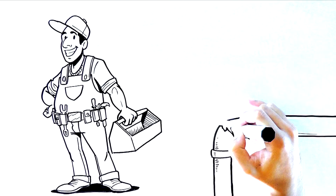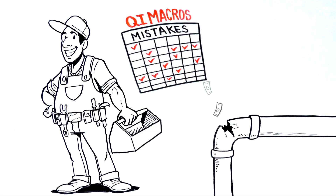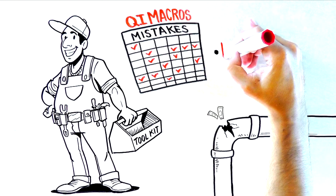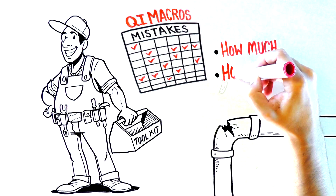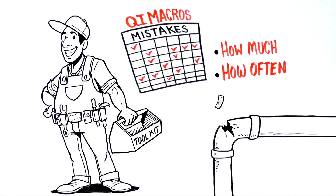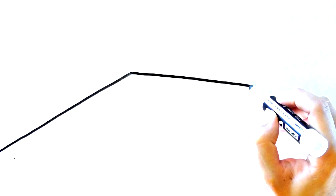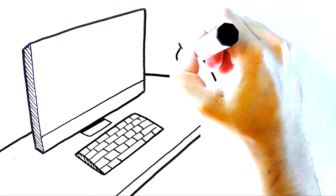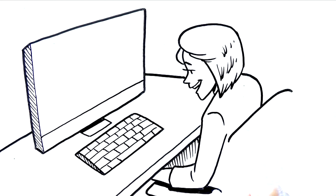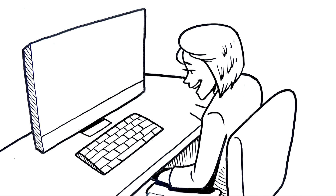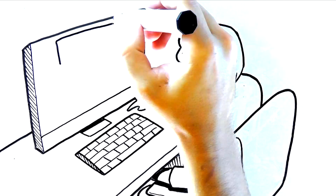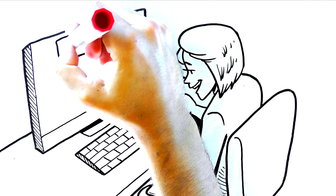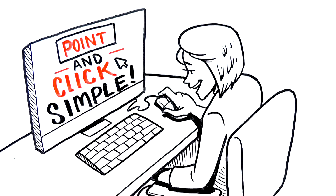What it takes is a methodical approach combined with the QI Macros toolkit to help you identify and categorize mistakes, figure out how much they're costing you and how often they're happening — then you know what to fix. The whole process is quick and easy using Microsoft Excel and the QI Macros spreadsheet tools developed by Jay. You don't have to be a computer whiz or be experienced with spreadsheets, statistics, or math. Jay's tools make it easy to use for everyone — it's point and click simple.